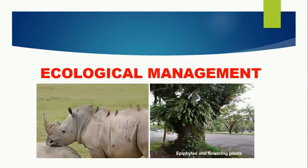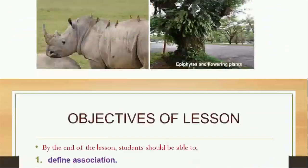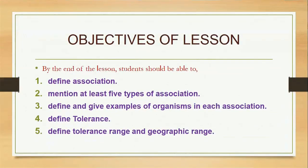Hello, my name is Gloria Roberts. Today we are looking at the topic ecological management. Objectives of the lesson: by the end of the lesson, students should be able to one, define association; two, mention at least five types of association; three, define and give examples of organisms in each association; four, define tolerance; and five, define tolerance range and geographic range.